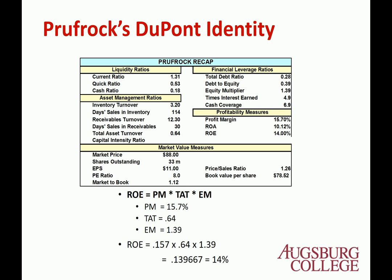This is the example of the DuPont identity. The ROE of this firm — you can directly calculate it, but if you don't have one and you have these three ratios, then you can compute the ROE like this. This ROE will be 14%, and you can verify that also using the balance sheet in the previous slides.